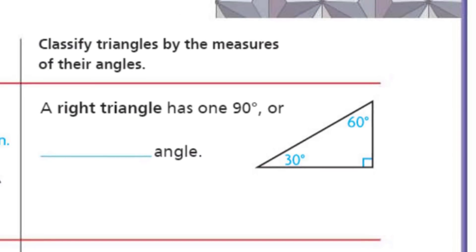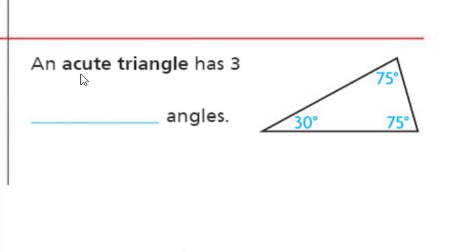Classify triangles by the measures of their angles. A right triangle has one 90 degree or right angle. It's a right angle because it's right here. And this is kind of easy. An acute angle is sort of cute because, and there is an acute angle right there because it's less than 90 degrees. And an acute triangle has three acute angles.